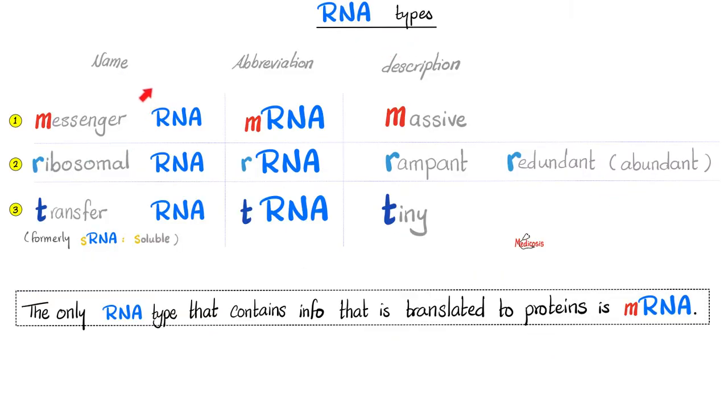RNA types. We have the messenger RNA. We have the ribosomal RNA and transfer RNA, formerly known as sRNA, which stands for soluble. Which one is the biggest RNA molecule? The mRNA. It is massive. Which one is the most abundant or redundant or rampant ribosomal RNA? Which one is the tiniest molecule? tRNA.